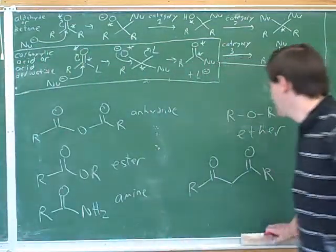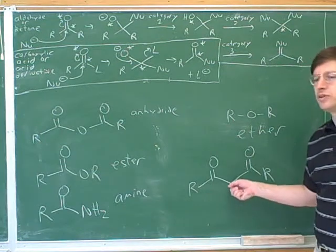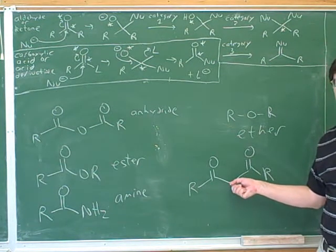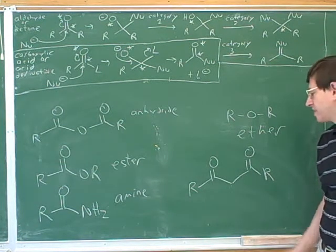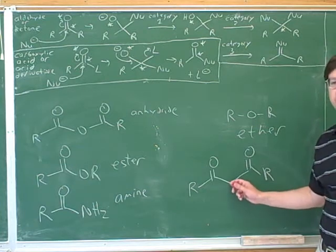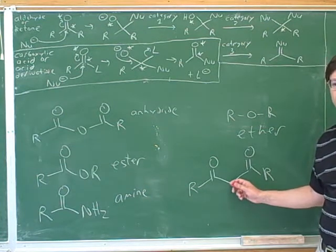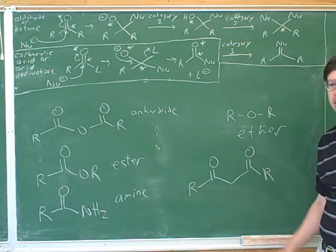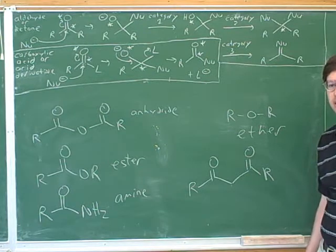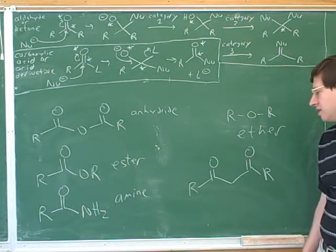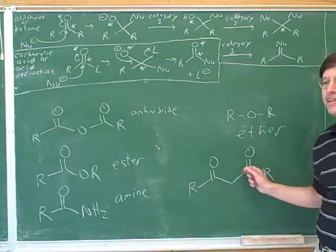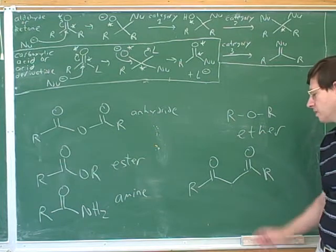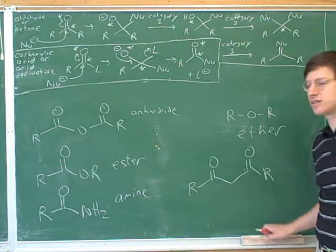This is an anhydride. What's the big thing we learned that you can do with these today? We learned one big thing: they have an especially acidic alpha carbon. Why? Because of resonance — you can do resonance to either the O or to the other side. So this is an especially easy way to make enolates.